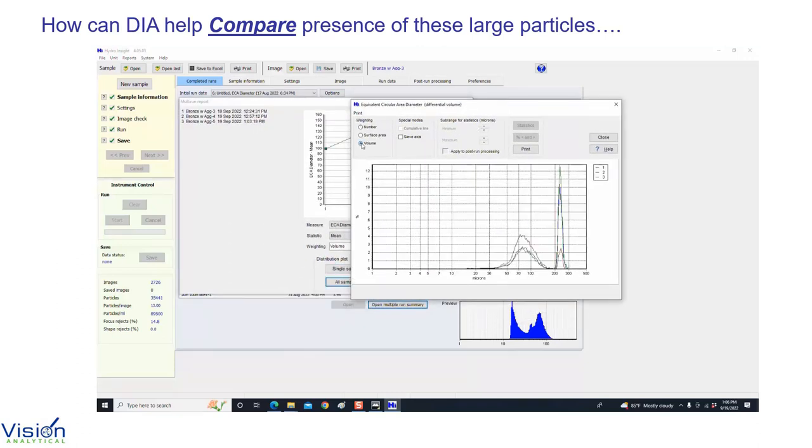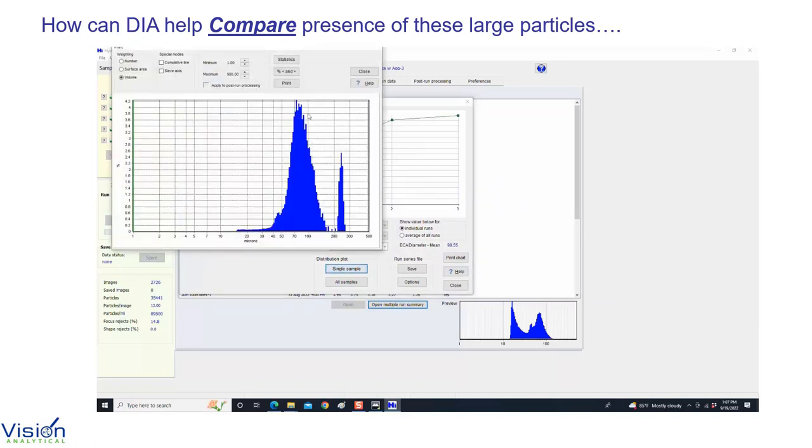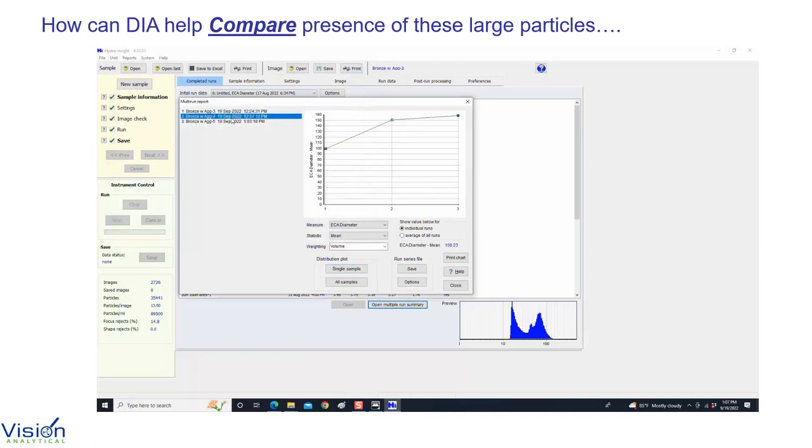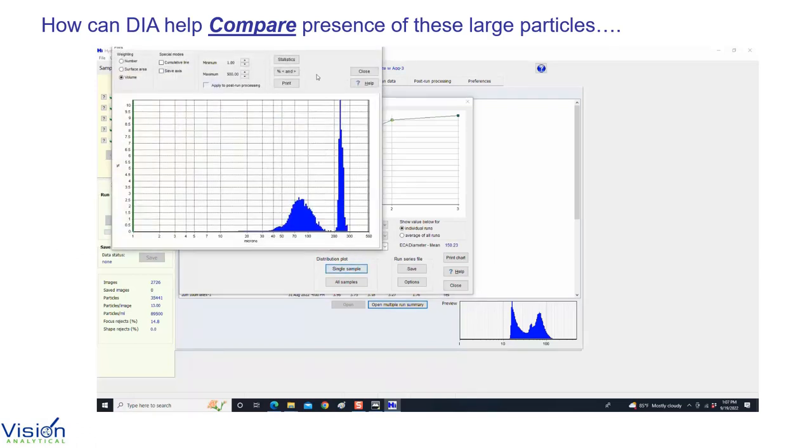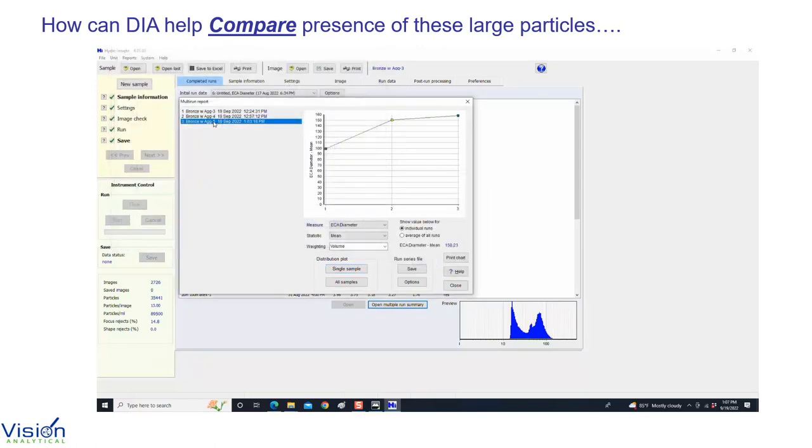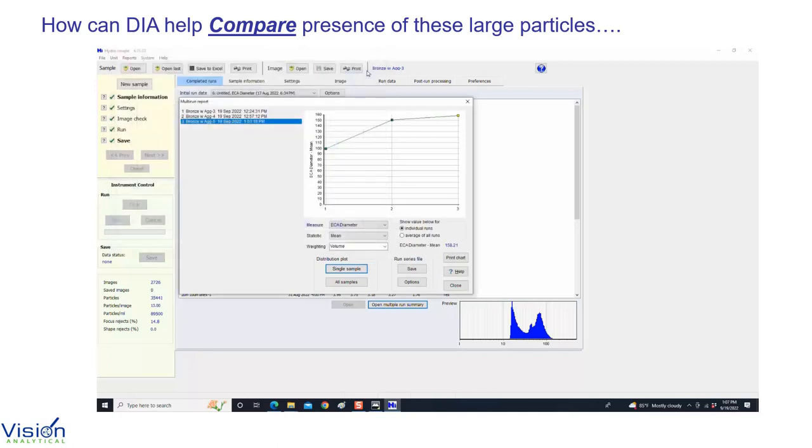Now, we can use dynamic image analysis to compare samples over time to determine if this is a growing problem. Are the agglomerates increasing over time? Are they decreasing over time? Is it a consistent problem? Are they staying steady over time? Also, if the process changes to address these agglomerates, you have to identify if the process change that you're making is being impacted by the change. So, the only way to do it is to overlay data over time and see if the change that you're making is having a positive impact.